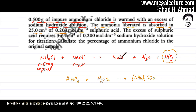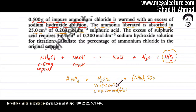The ammonia produced in the previous reaction is now reacted with H2SO4 to produce ammonium sulfate. The information provided is the volume and concentration of sulfuric acid used: volume is 25 cm³ and concentration is 0.200 mol per dm³ — both accurate to three significant figures.